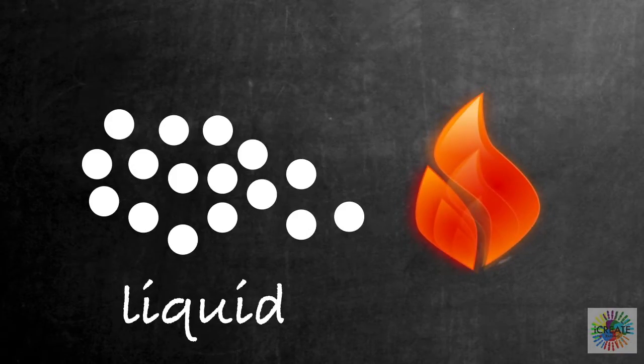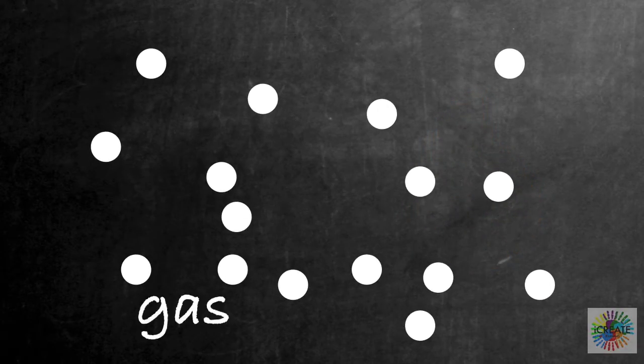If we continue to add heat to the liquid then the molecules spread apart even further as the bonds weaken more. They form a gas. If we were heating water this process would be called evaporation.